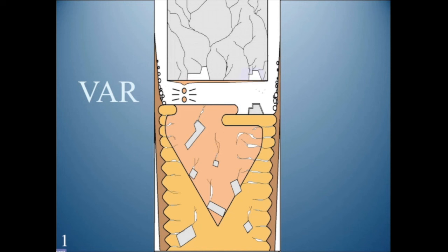We had both a vacuum arc machine and an electroslag machine in the same lab and would melt the same metal in both. With a difficult nickel-base alloy called Waspaloy, the electroslag ingot would go into the forge and work like butter — beautiful. The vacuum arc ingot we would put under the forge, and it would fracture on the very first stroke.